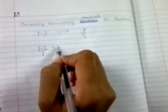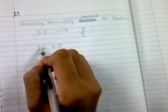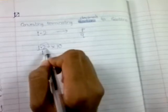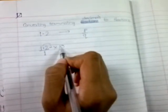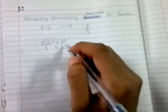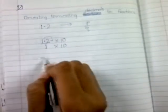If you multiply by 10, the point shifts one digit to the right and gets removed. But you can't just multiply the numerator by 10 and leave the fraction as is—you have to multiply the denominator by 10 as well. So multiply both the numerator and denominator by 10. 1.2 times 10 gives you 12.